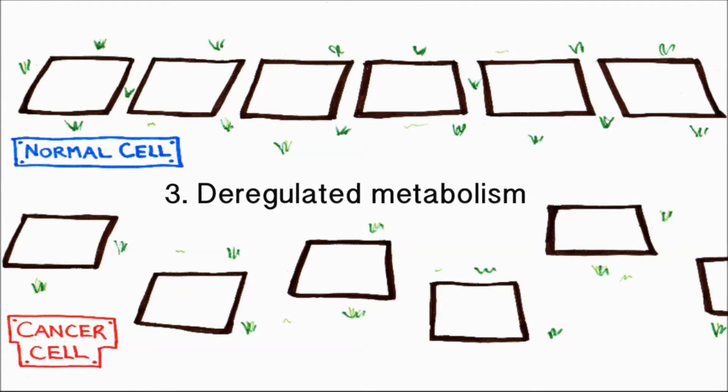Number three, the process by which cells use chemical reactions to create products is known as its metabolic pathways. In cancer cells, these step by step reactions are abnormal and deregulated.